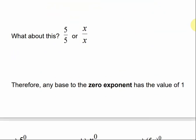If we have 5 divided by 5, or x divided by x — anything divided by itself — the answer is 1. Now if we apply the quotient rule: 5 is understood to be to the 1st power, so 5 divided by 5 is the same as 5 to the 1 minus 1, which is 5 to the 0 power. We just verified that 5 divided by 5 is 1, so 5 to the 0 power also equals 1.